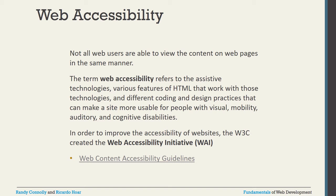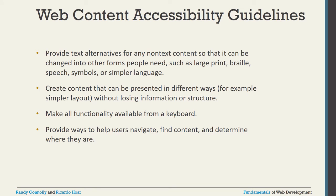Another very important topic is web accessibility. Not all web users are able to view content on a web page in the same manner. The term web accessibility refers to assistive technology, various features of HTML that work with those technologies, and different coding and design practices that can make a site more usable for people with visual, mobility, auditory, and cognitive disabilities. To improve the accessibility of websites, the W3C created a Web Accessibility Initiative (WAI) with certain guidelines we have to follow.